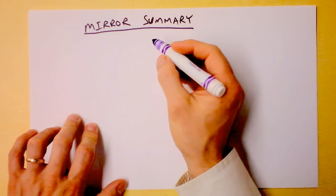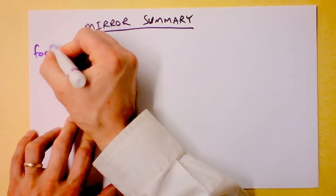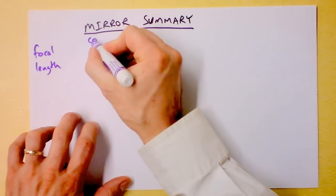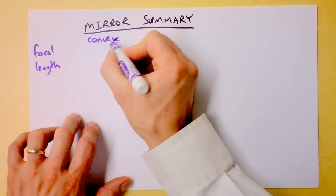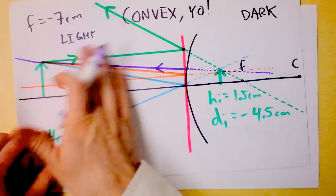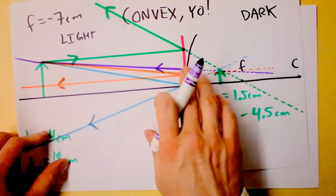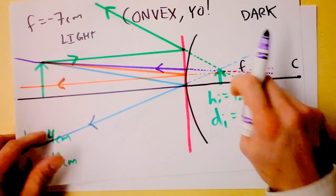First, we will address the focal length of all three types of mirrors, and the first type of mirror will be convex. A convex mirror, something like this, where there's light over on this side and darkness over here. A convex mirror is going to have a focal length that's on the opposite side.